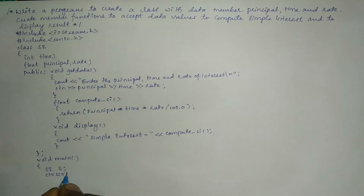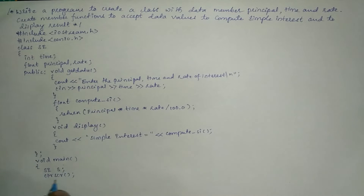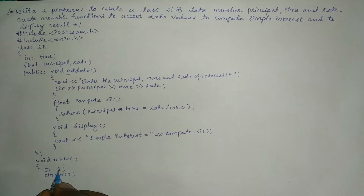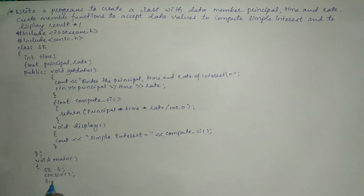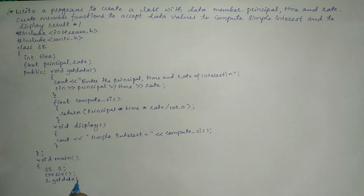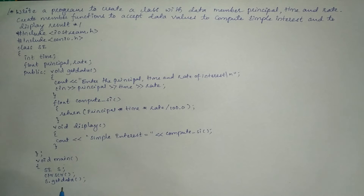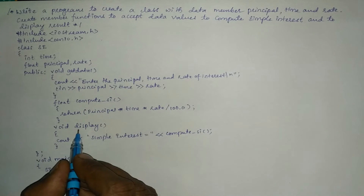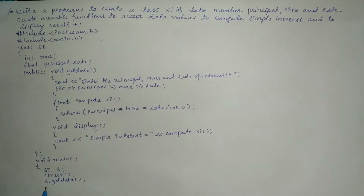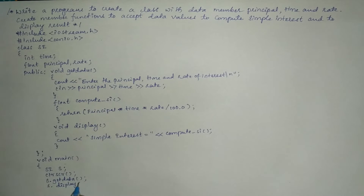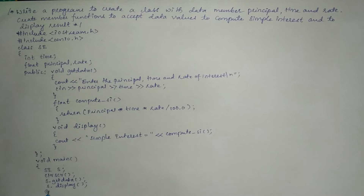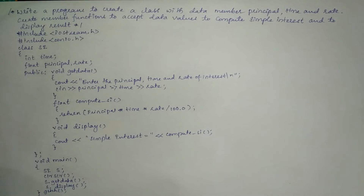Now I am going to write the clrscr function, which is optional — you can omit it if you wish. With the help of this object I am going to call the get_data function: y.get_data with a semicolon. Next I call y.display. Then I write getch(), followed by a curly closing brace for the main function.